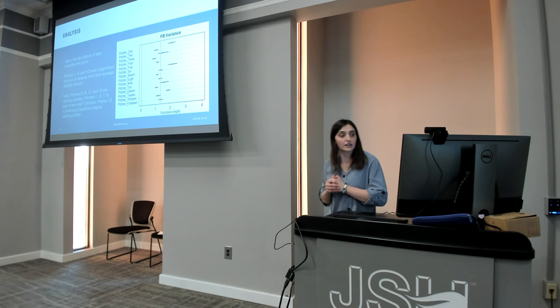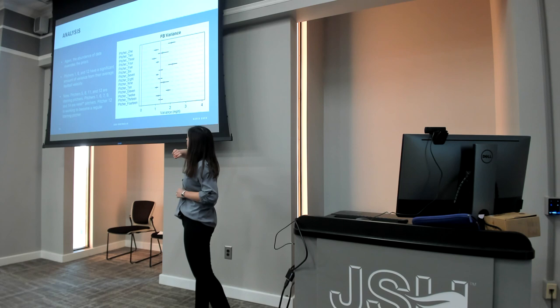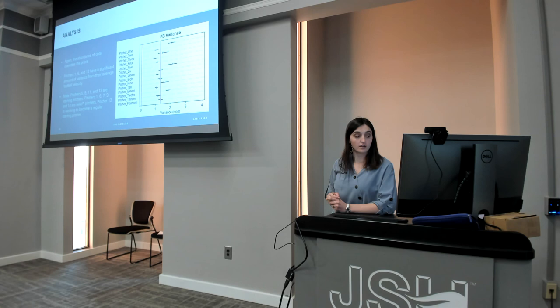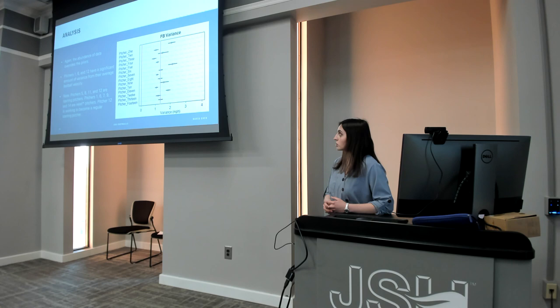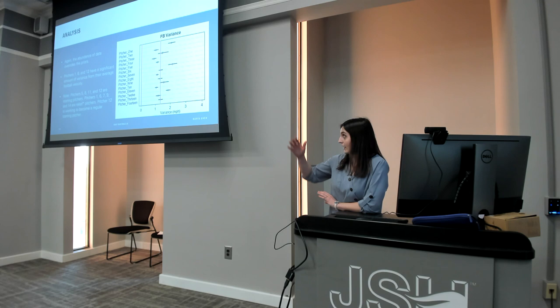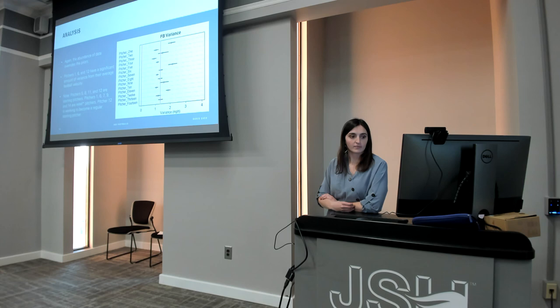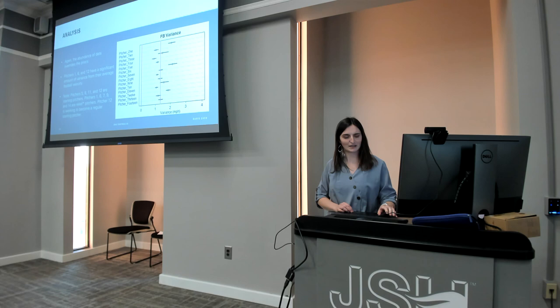Pitchers 5, 8, 11, and 12 were all starting pitchers, and all of those are within the region of practical equivalence — they had more consistent pitches. While pitchers 1, 6, 7, 9, and 14 are relief pitchers, who come in the middle of a game after the starting pitcher has pitched a few innings. Relief pitchers have more variance, but that's okay — it can be used in gameplay. Starting pitchers usually have more stamina and more consistent results. I also noted that pitcher 12 was within the ROPE and was working to become a regular starting pitcher.